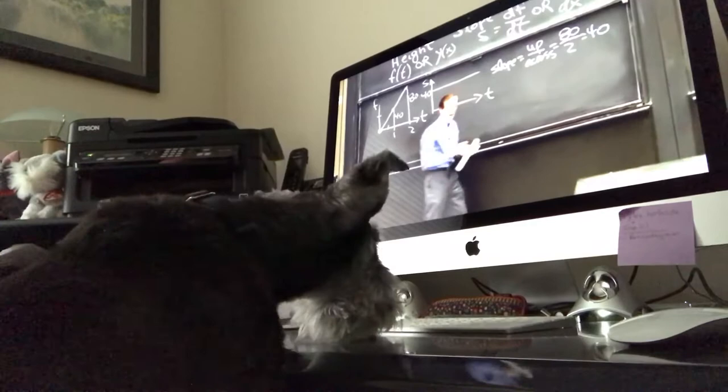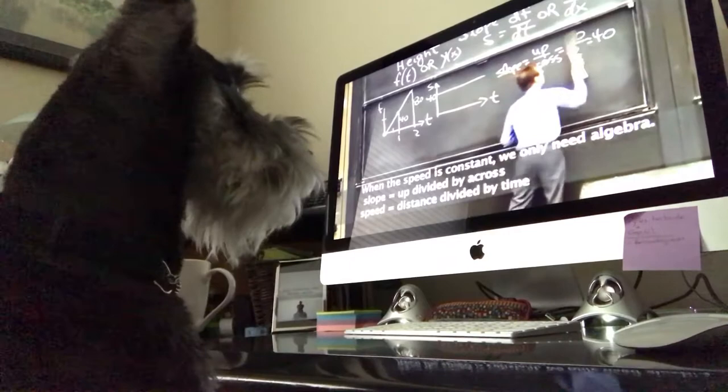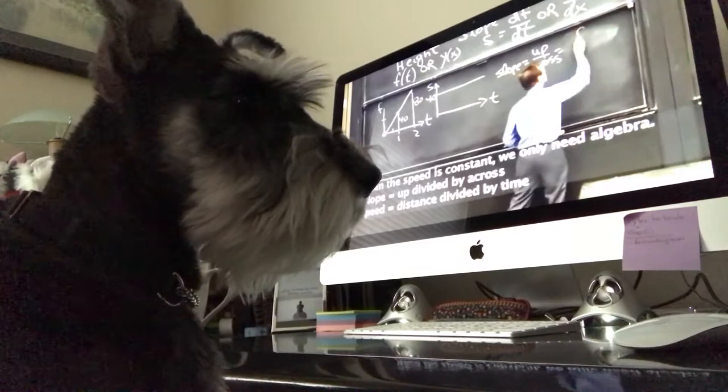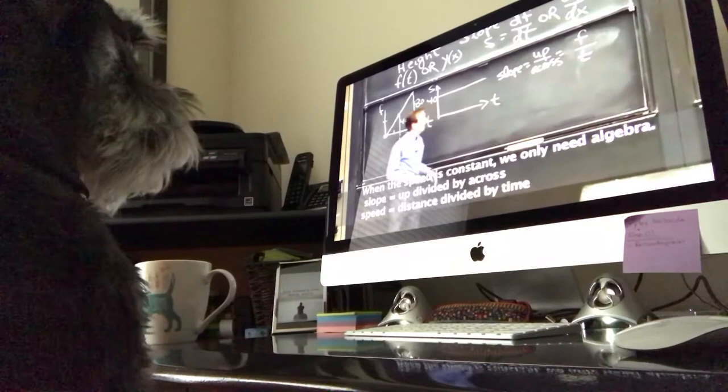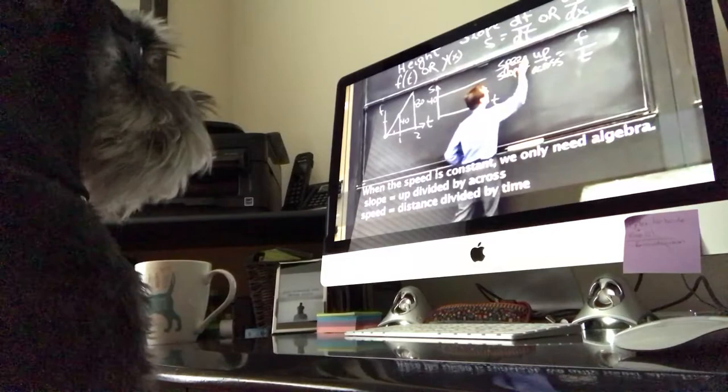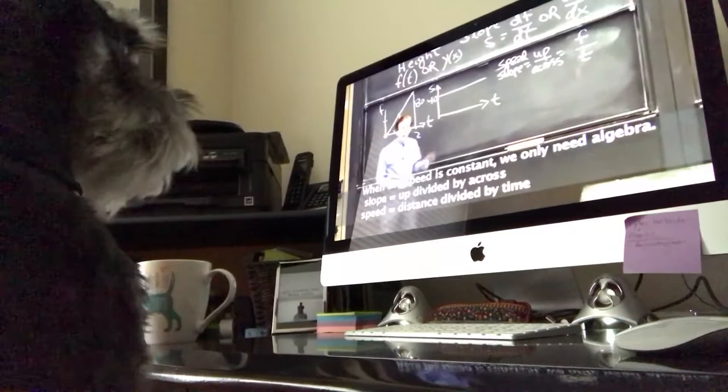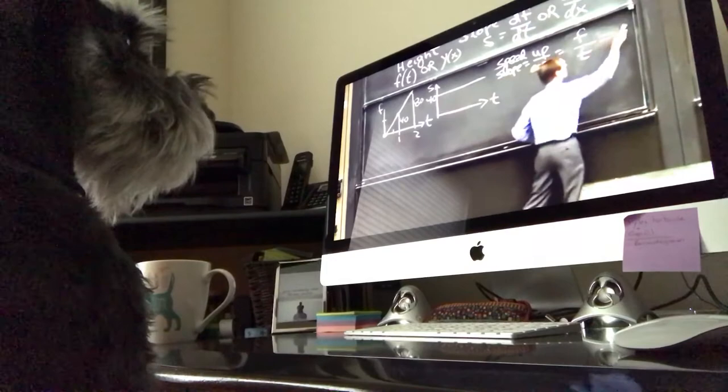This is the step we can take because the speed is constant. And we can just divide the distance by the time to find, and this slope, let me write speed also. Up over across, distance over time, f over t. That gives us s. This is s.